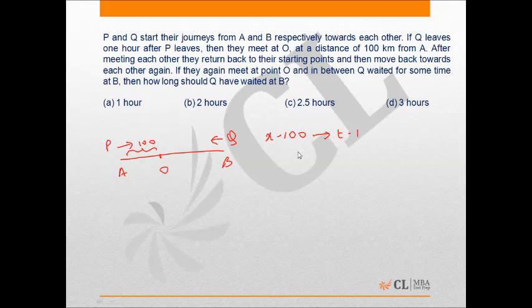Now when they meet for the second time, Q has to cover twice of X-100 because he will go from O to B and then B to O. So he should actually just take twice the time he took initially, which is twice of T-1, which is 2T-2 hours.